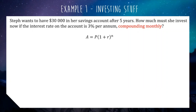So we have our compound interest formula. If you find that hard to memorize, there is a version of that on your formula sheet — it just looks a little bit different. Instead of P for principal, they say PV for present value, which means the same thing. And instead of A for final amount, they have FV for final value. It's the exact same formula, just maybe a bit unfamiliar to you.